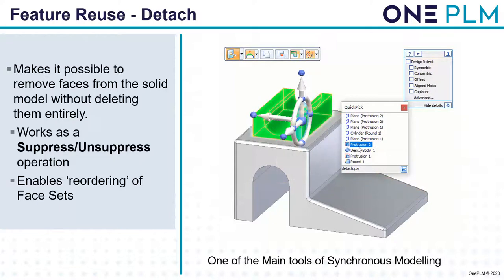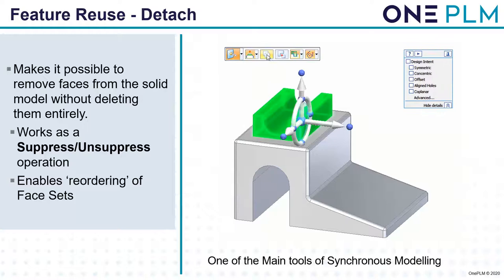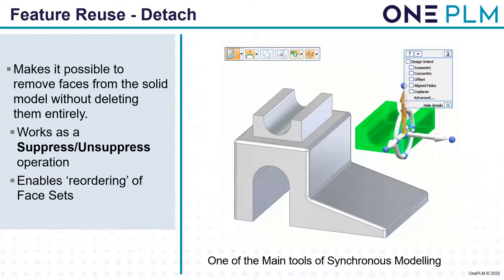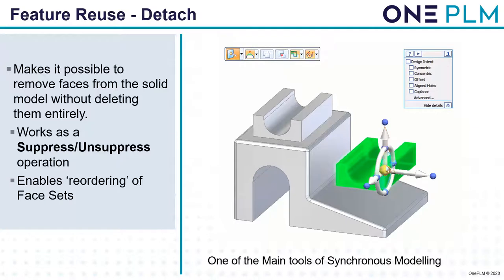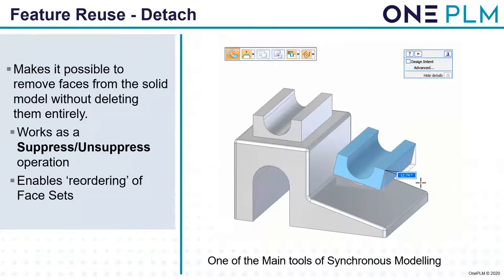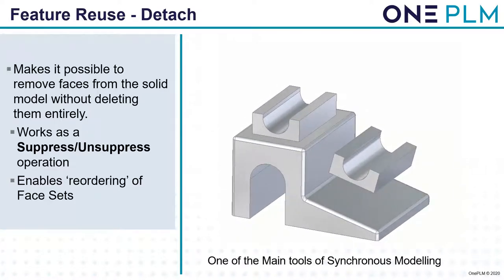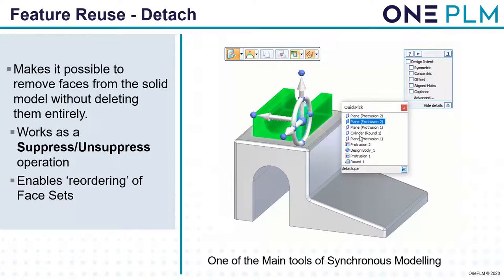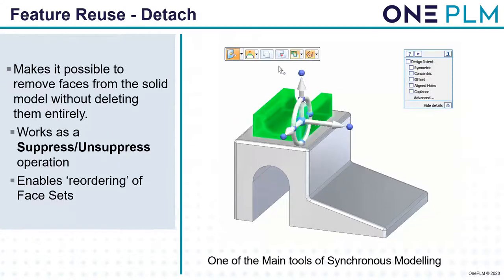Another tool for reusing features is detach — this makes it possible to remove faces from the solid model without deleting them entirely. They will disappear but can be turned back on in the pathfinder on the left. This works as a suppressed/unsuppressed operation and also enables reordering of face sets. In this example we copy a face, get it into position on new faces, do a rotate to match the underlying face, and when we attach it, all other faces extend to meet the existing face. This is really useful when making changes to an existing part — you can detach features, make the edit, then reattach once finished.